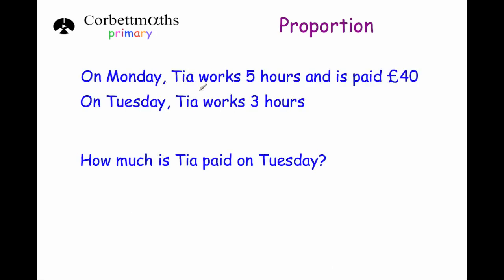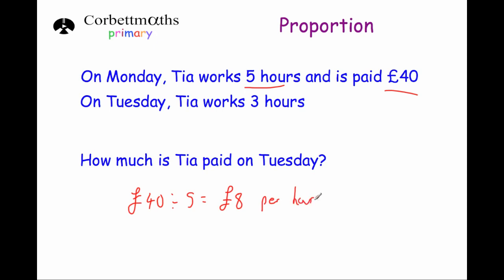Our next question: on Monday Tia works five hours and is paid £40. On Tuesday Tia works three hours. How much is Tia paid on Tuesday? We work out how much Tia is paid per hour: £40 divided by five is eight. So Tia earns £8 per hour. To find how much she gets on Tuesday, we do eight times three, which equals £24. So on Tuesday Tia is paid £24.